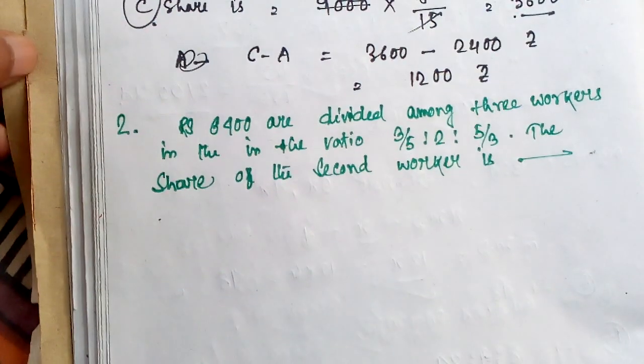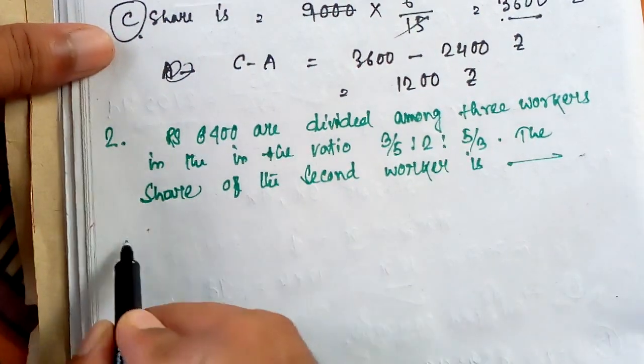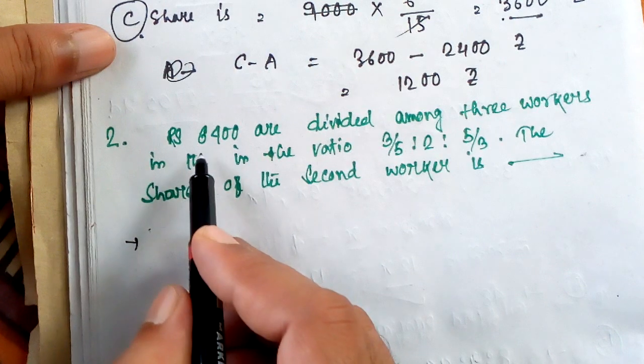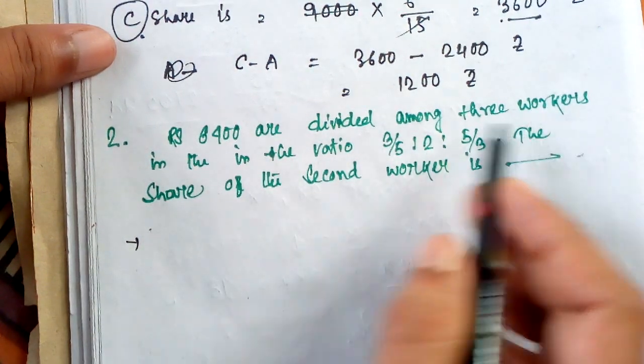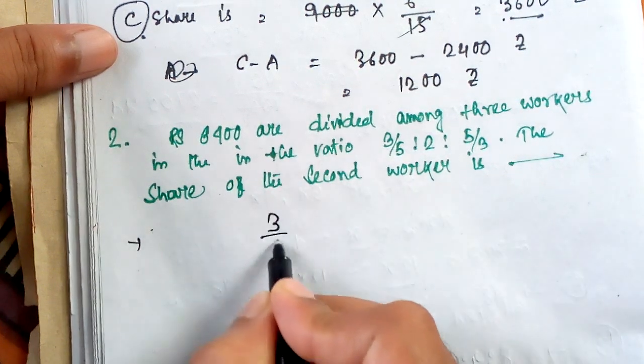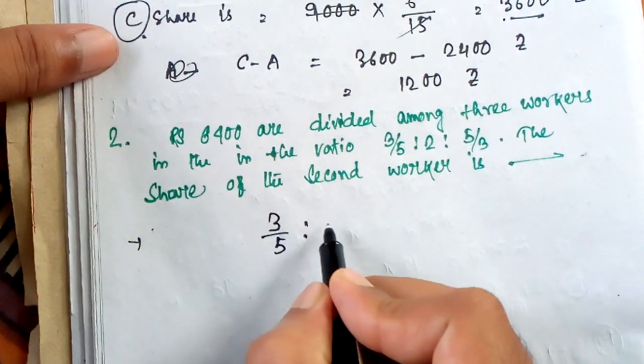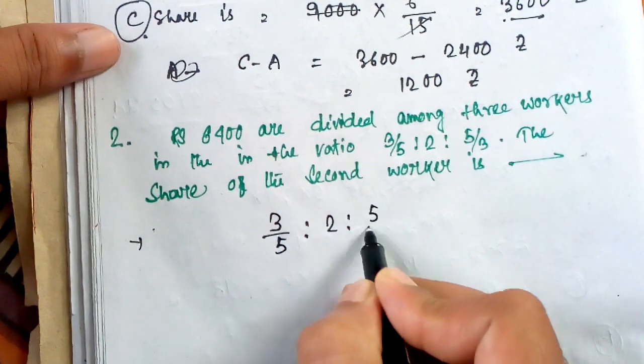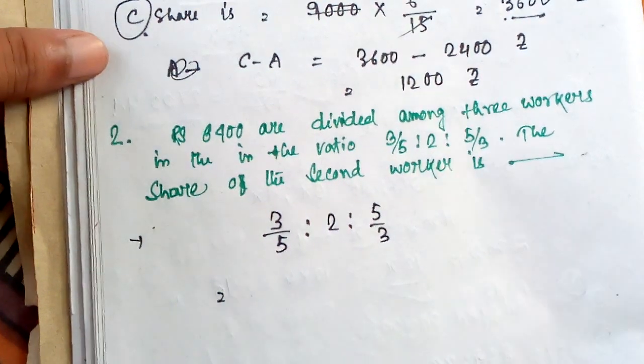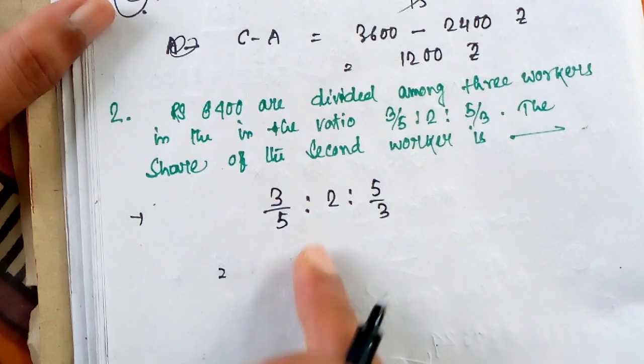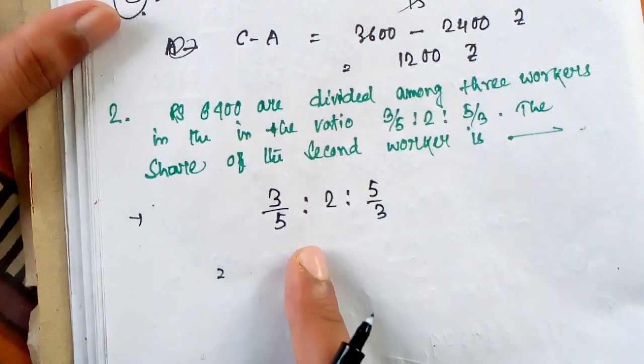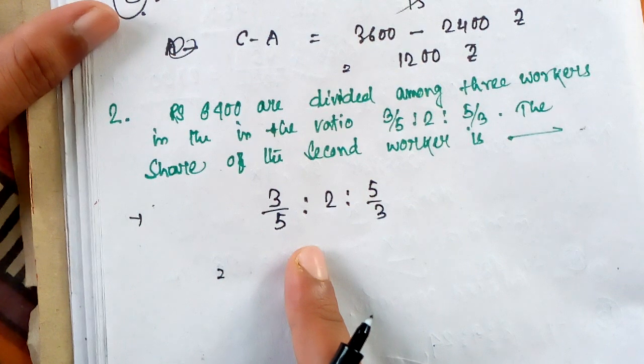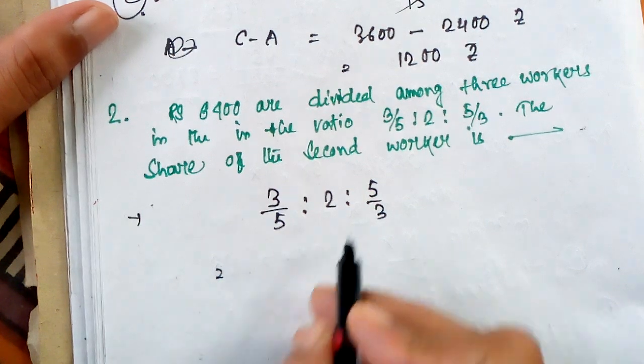Now, here we try to solve this type of problem. Rupees 6400 are divided among 3 workers in the ratio 3 by 5 is to 2 is to 5 by 3. Now, here fraction ratios are taken. And we try at first to convert fraction ratio into simple ratio.